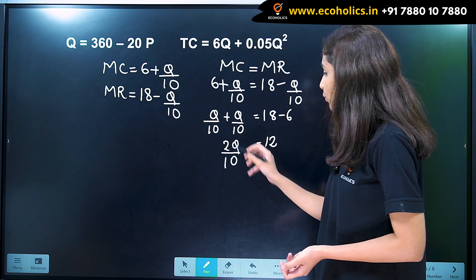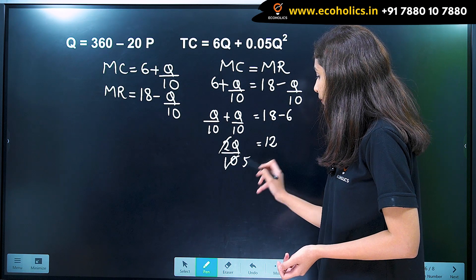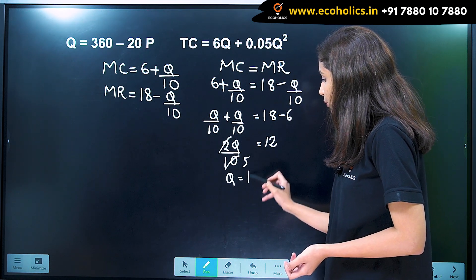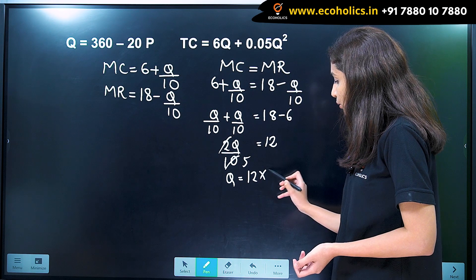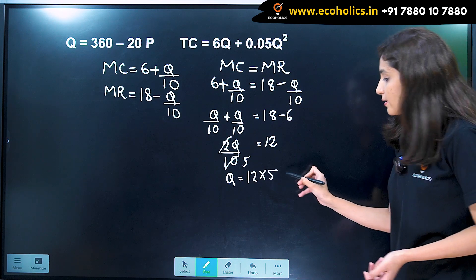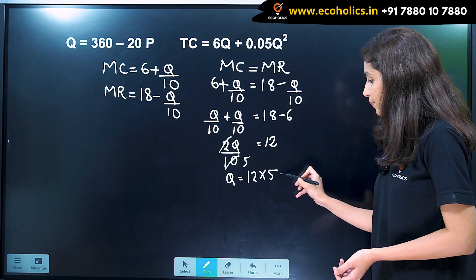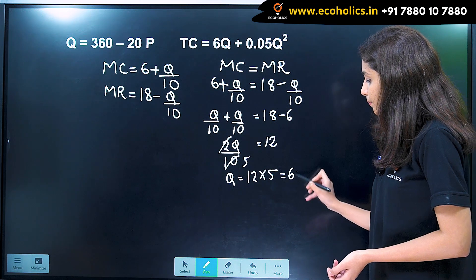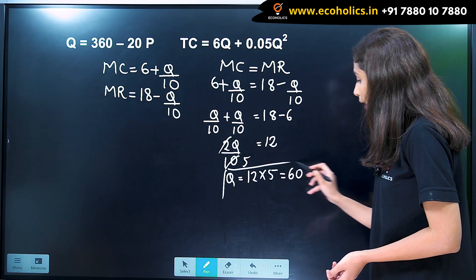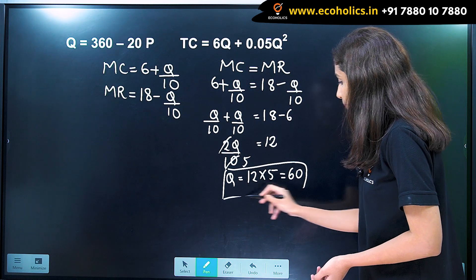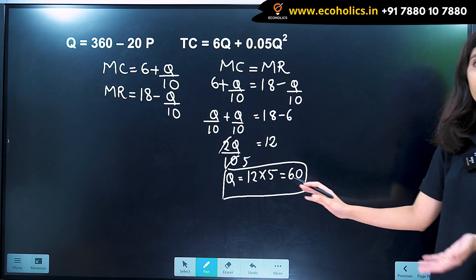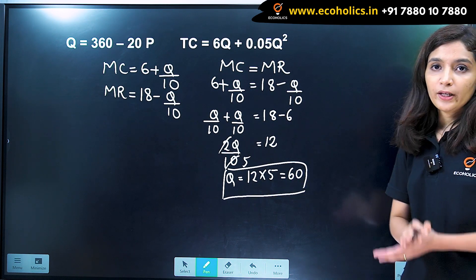Therefore, Q = 12 × 5 = 60. So the quantity that the monopolist will produce is 60 units.